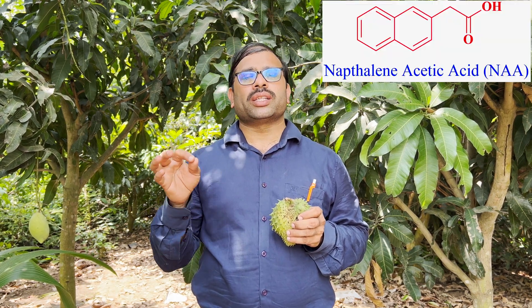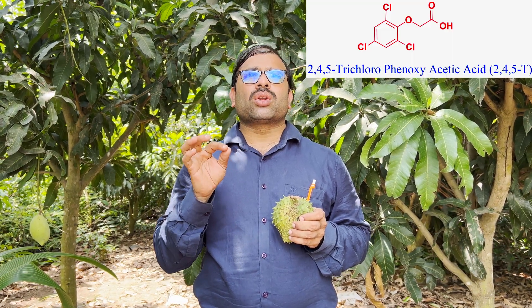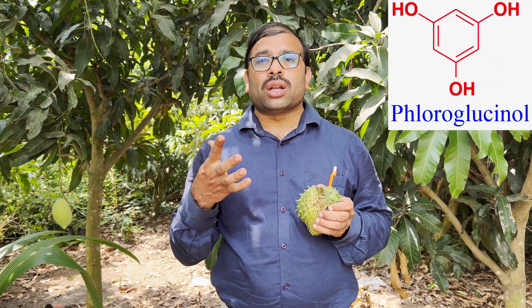The second type is synthetic rooting hormones, which are Naphthalene Acetic Acid known as NAA, 2,4-Dichlorophenoxyacetic Acid known as 2,4-D, and 2,4,5-Trichlorophenoxyacetic Acid. Among these, Naphthalene Acetic Acid (NAA) is the most widely used synthetic rooting hormone. Apart from that, there are some miscellaneous chemicals like jasmonic acid, brassinolides, strigolactones, and phloroglucinol that are also used as rooting promoters.